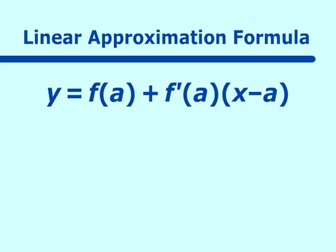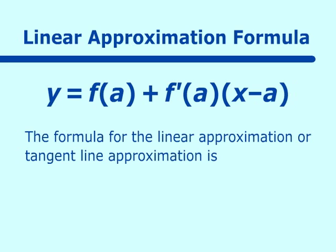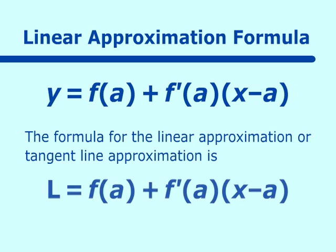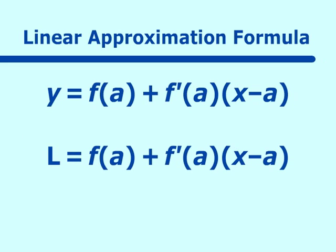What is the linear approximation formula? The formula for the linear approximation or tangent line approximation is L equals f of a plus f prime of a times x minus a. You'll see very readily that the only thing that changes is the L — instead of using y equals, we use L equals. So we really only have the formula for the equation of a tangent line.